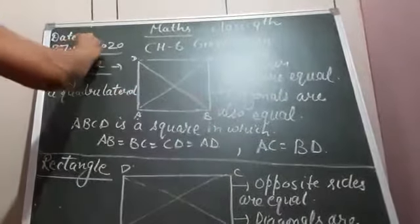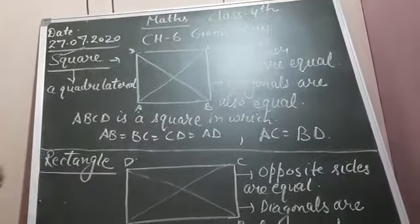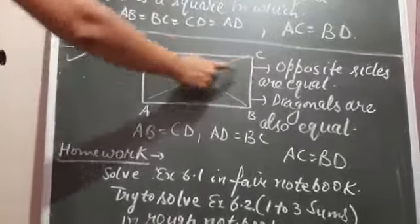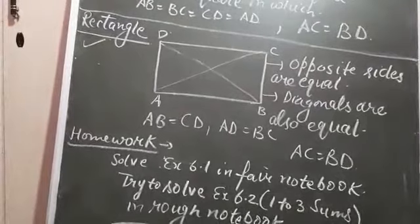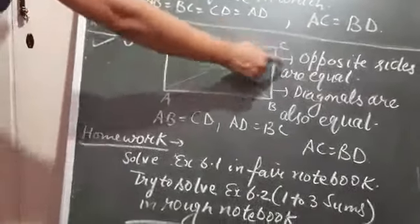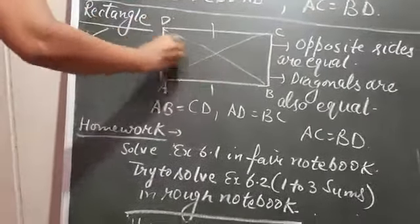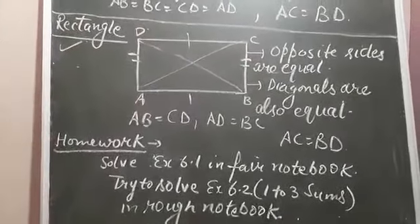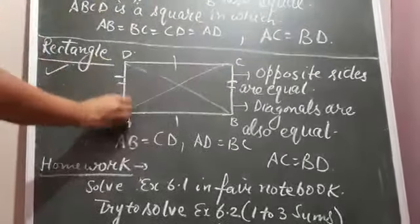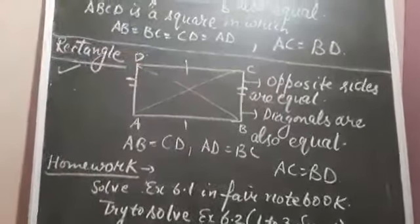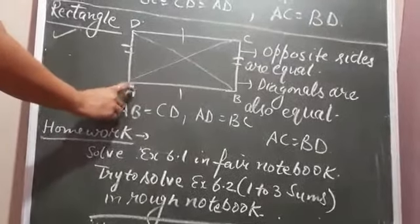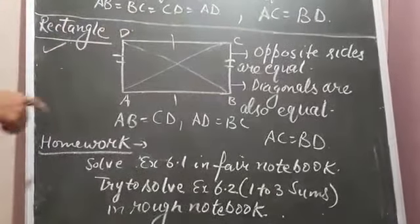Next is rectangle. A rectangle is a quadrilateral in which opposite sides are equal. I have told you that these sides are called adjacent sides and these sides are called opposite sides. So here in rectangle ABCD, opposite sides are equal, and the diagonals are also equal. The name of this rectangle is ABCD.